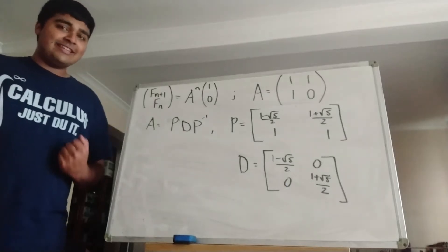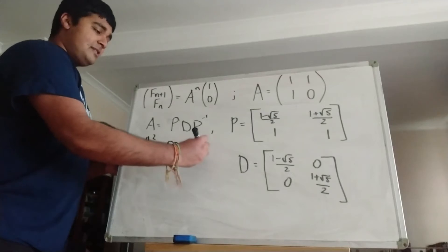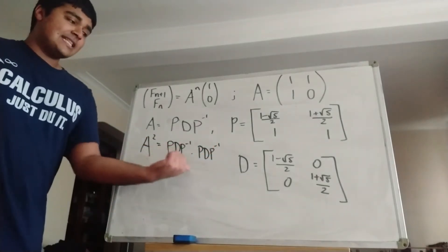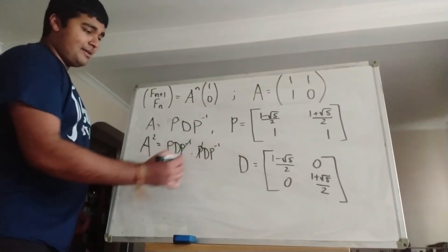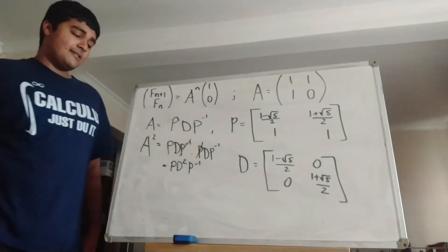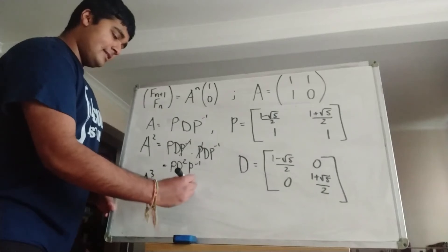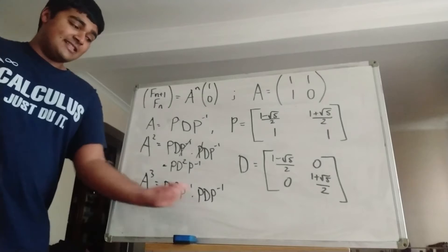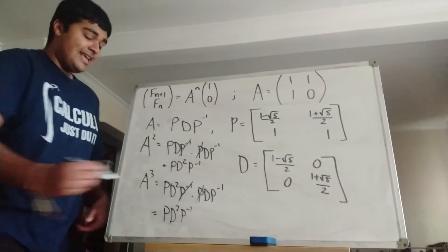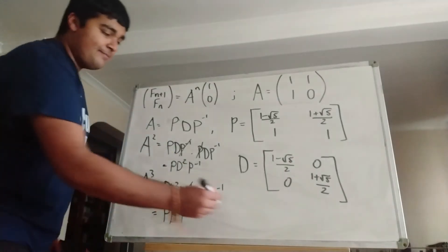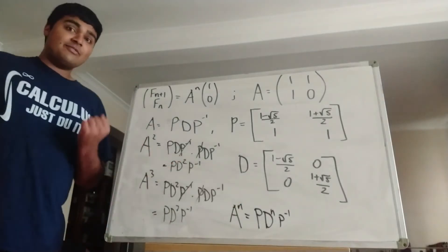Now, what's really nice about this is because we want to raise A to the power of n, and we can write it as P D P inverse, there's a really neat trick. Let's look at A squared: it's P D P inverse times P D P inverse. But this P inverse and this P cancel because P inverse times P is just the identity matrix, which acts like 1. So we're left with P D squared P inverse. Similarly, A cubed is A squared times A, giving P D squared P inverse times P D P inverse. Again, the P inverse and P cancel, leaving P D cubed P inverse. This pattern continues, so A to the power of n equals P D to the n P inverse.